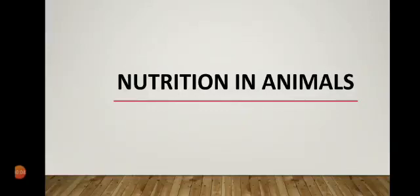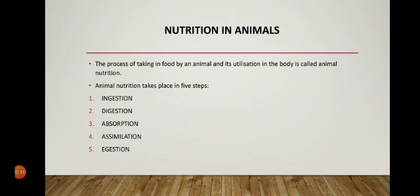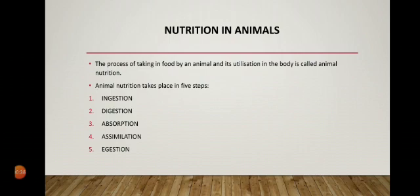Today we start a new chapter: Nutrition in Animals. In the previous chapter we studied that plants can make their own food by photosynthesis. Animals, however, cannot make their own food by photosynthesis, so they need ready-made food which comes from plants or other animals. This mode of nutrition is known as the heterotrophic mode of nutrition.